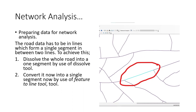All these lines have to be dissolved and made into a single line. Then I converted them into single segments using the feature to line tool, which broke down the lines so that each one is a single segment.